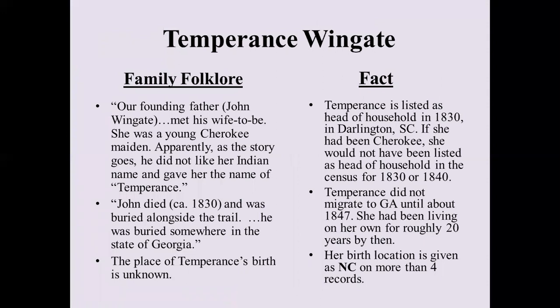Back to Temperance — this is where we have family folklore versus fact. One of the biggest family folklores passed down through some of the generations, quoted from a published book, says: 'Our founding father, who would have been John Wingate, met his wife-to-be. She was a young Cherokee maiden. Apparently he did not like her Indian name and gave her the name of Temperance.' I think this is the most common myth in almost all Southern families — that they have a great-grandmother who was a Cherokee princess or full-blooded Cherokee. In almost 99 percent of cases, this is simply folklore.